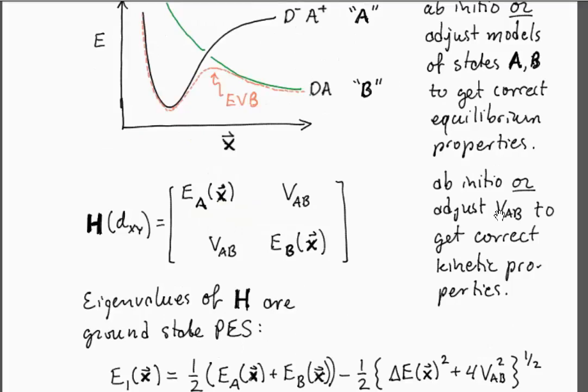You can include whatever level of empiricism that you want. You could in principle compute these things quantum mechanically, or you can develop force fields using this as an adjustable parameter to get the right kinetic properties. The force fields that we use already have adjustable parameters that allow us to describe the stable thermodynamics of states A and B.